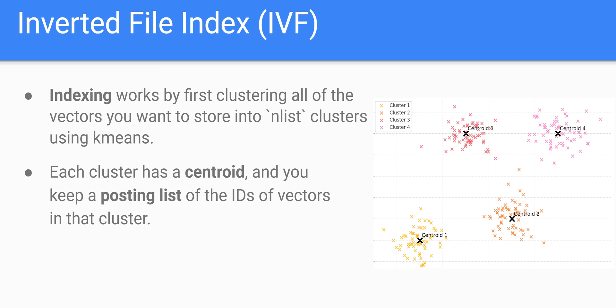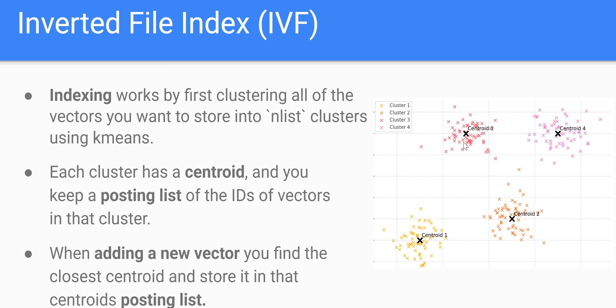What IVF is going to do is that for each cluster, it's going to keep a posting list of the IDs of the vectors in that cluster. In the data structure, the centroid is the key, and that key maps to a list of the IDs for all the vectors in its cluster. So when you go to add a new vector to your vector database, you find the closest centroid and store it in that centroid's posting list. If the closest centroid for a new vector is centroid 2, you store it in that list for that centroid.